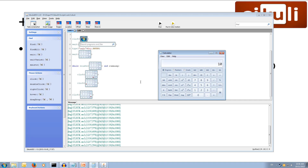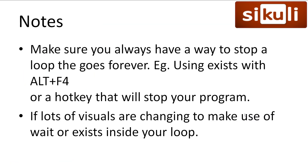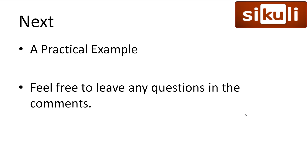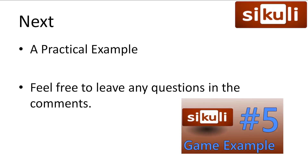That all worked successfully. Some final notes to keep in mind: make sure your loop has a way to stop. Getting stuck in an infinite loop with Sikuli can be painful, as it has control over your mouse and sometimes your keyboard. Try to avoid it with things like a hotkey, as in our example, or using the exists function on a window that can be Alt+F4 closed. Also, if there are lots of visuals changing, remember to use wait or exists to be certain what you want to click is actually visible. That's it for this video — we can now repeat tasks and use global hotkeys. In the next video, we'll put everything together to create a simple automation script that will play the free clicker game Clicker Heroes. Leave questions in the comments and don't forget to subscribe.